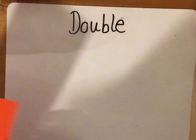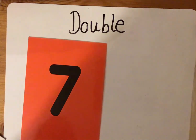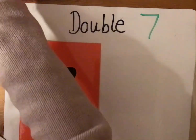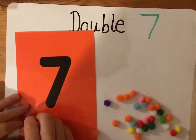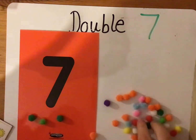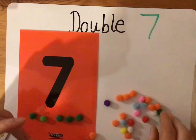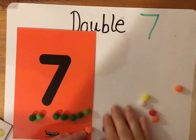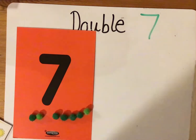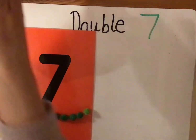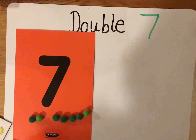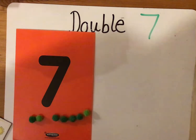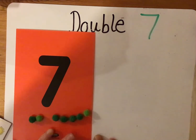I would like you now to have a go at double seven on your own. You can use objects to help you. You can get out your counting objects and count out seven pom-poms or whatever you're using — cereal, lego, whatever you've got — and then add another seven to find your answer, or you can work the answer out in your head, or you can draw pictures. It's up to you. Mums and dads, if you just want to pause the video now, and when the children think they've got an answer, come back again and we will check the answer together.